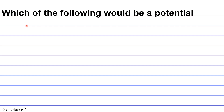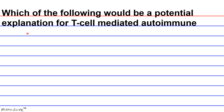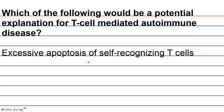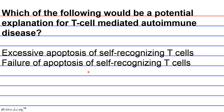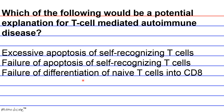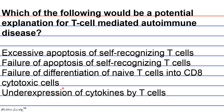Question: Which of the following would be a potential explanation for T-cell mediated autoimmune disease? A) Excessive apoptosis of self-recognizing T-cells; B) failure of apoptosis of self-recognizing T-cells; C) failure of differentiation of naive T-cells into CD8 cytotoxic cells; or D) underexpression of cytokines by T-cells? This may require outside knowledge separate from the passage.